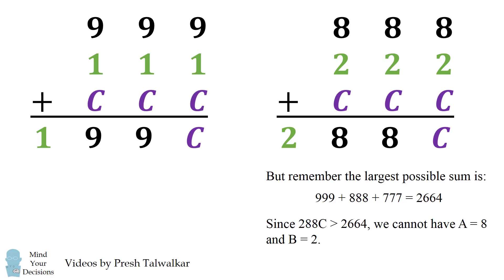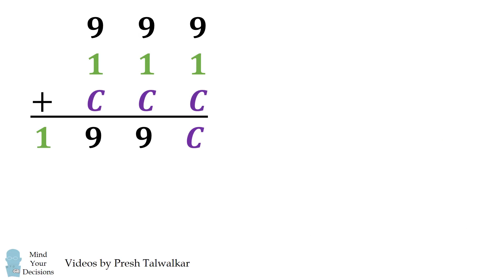So we now know that A has to equal 9 and B has to equal 1, if there are any solutions. So is there any value of C that can make this possible? Well, let's add up what we know. We have 999 plus 111, which equals 1110. The final answer is 1990C.